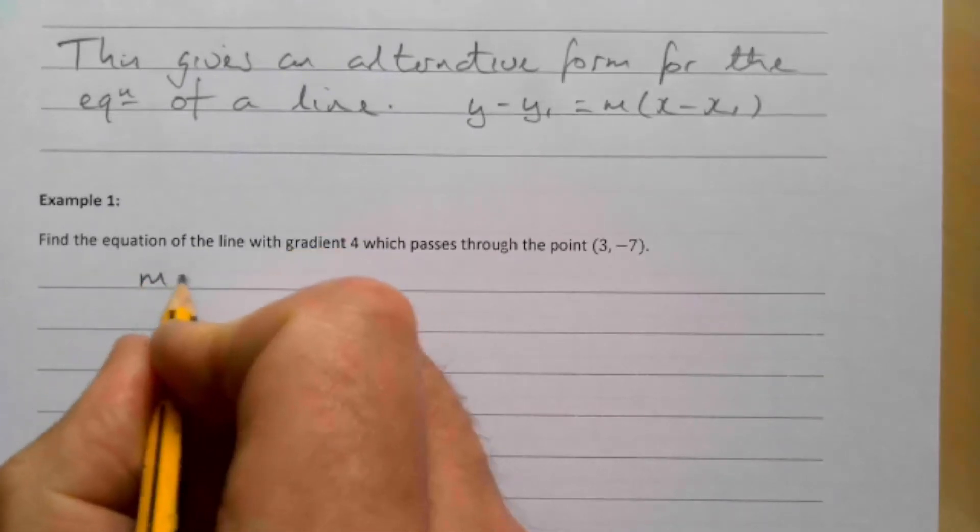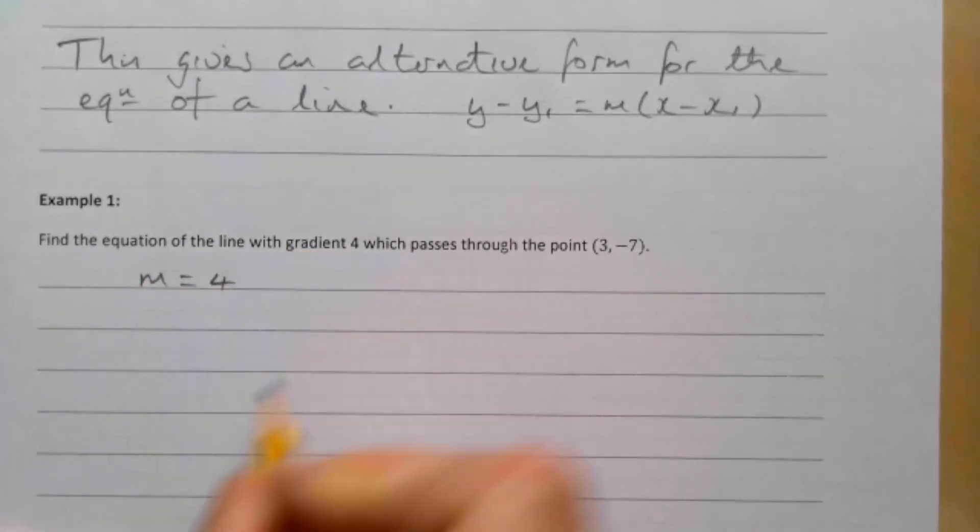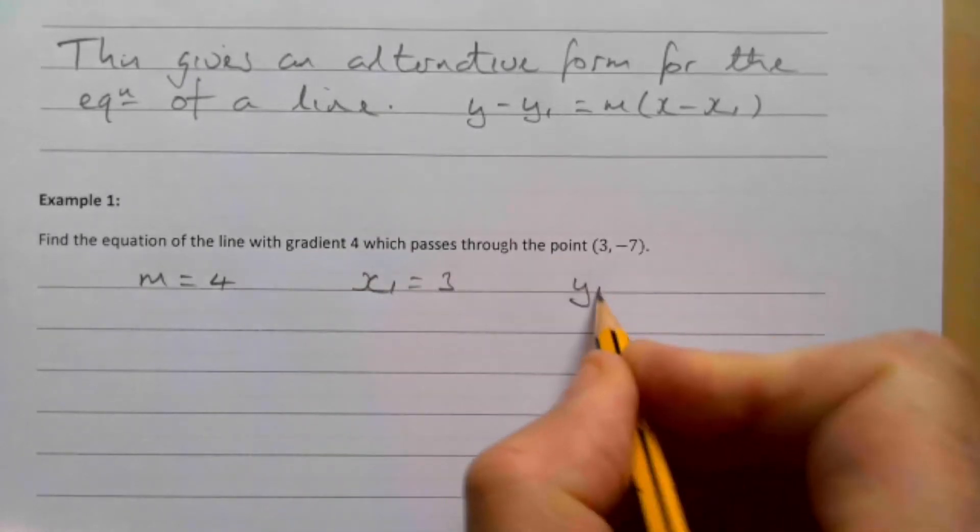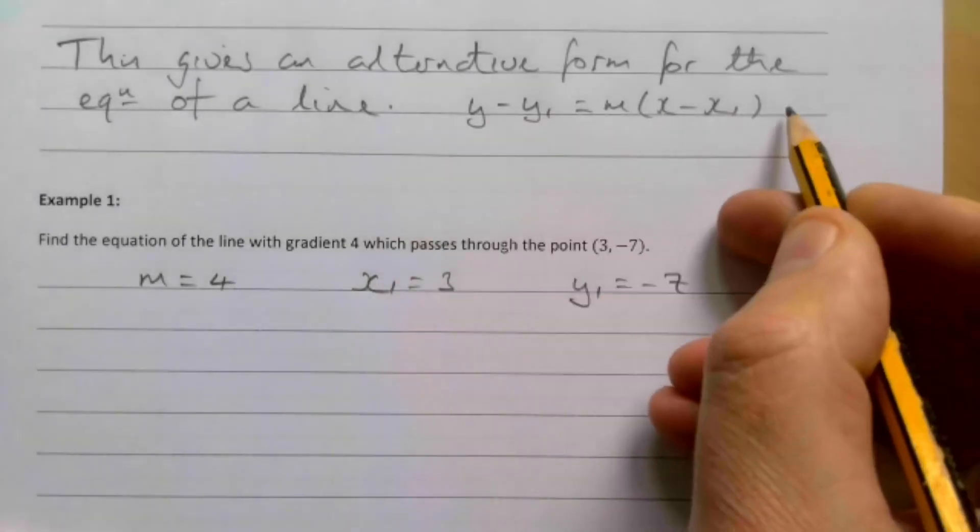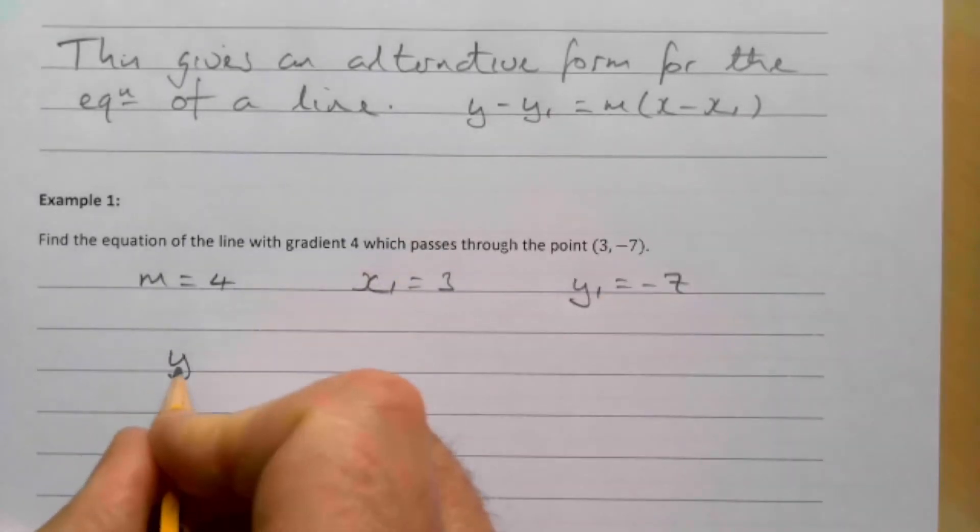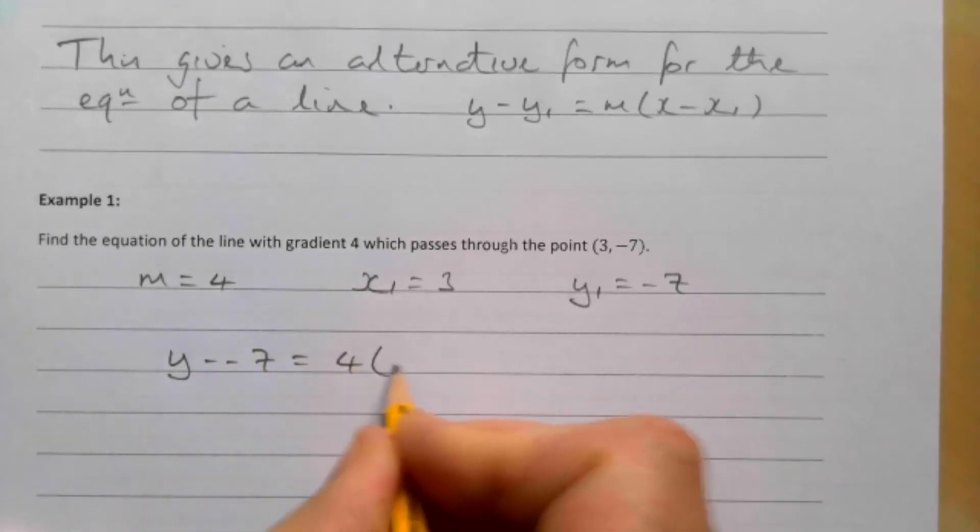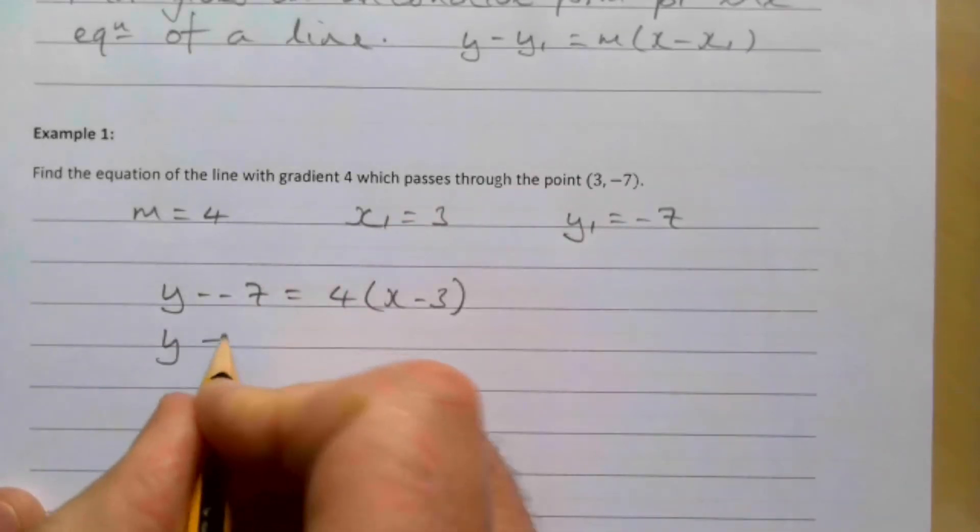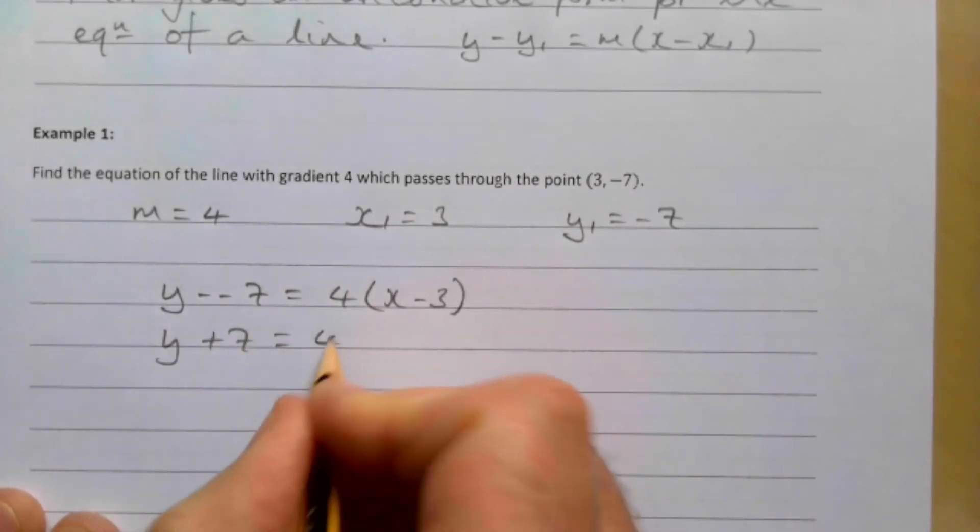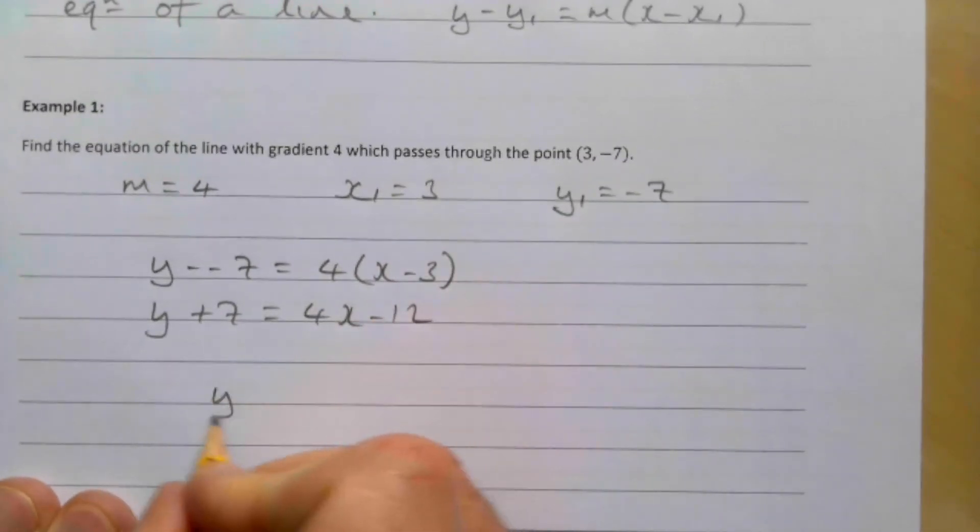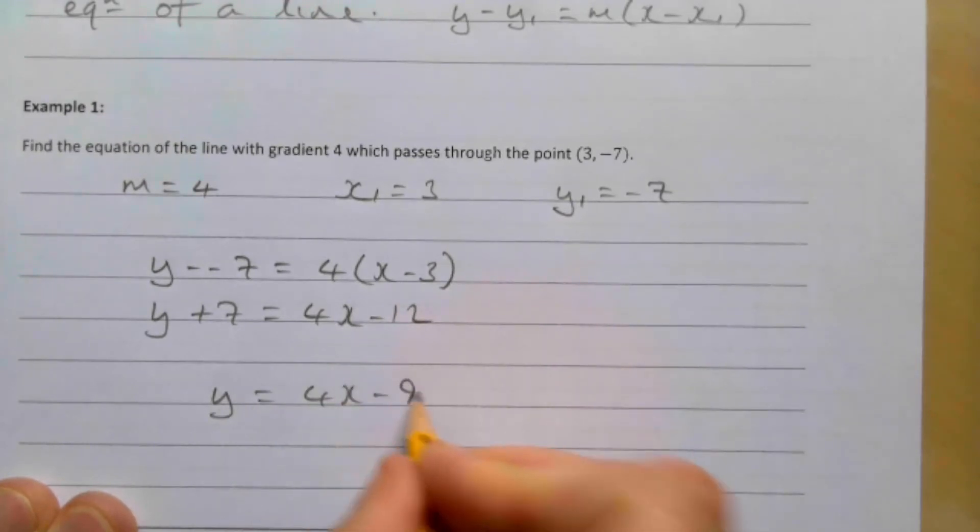Let's just show that this will work as well. So we know our m, in this case, is 4. We know our x1 is 3. And we know our y1 then is -7. So just substituting it into this, we're going to get y - (-7) = 4(x - 3). That gives me y + 7 = 4x - 12. And rearranging then obviously gives us y = 4x - 19.